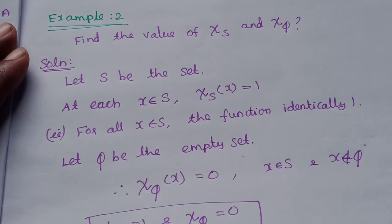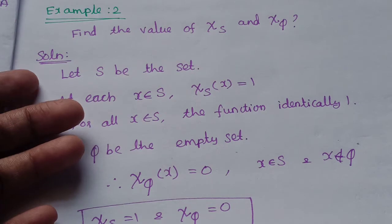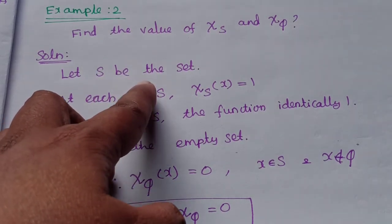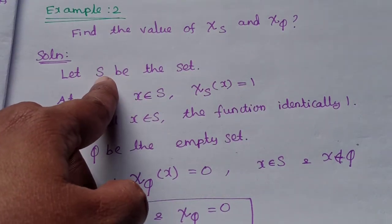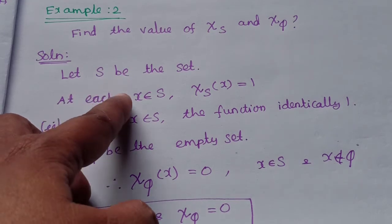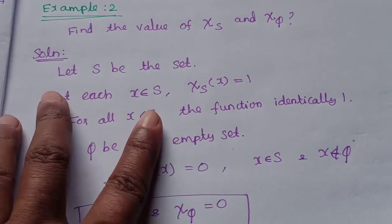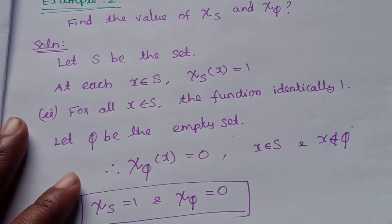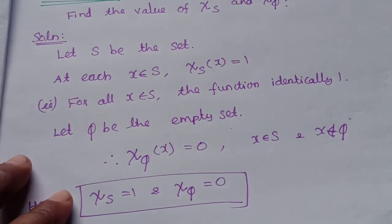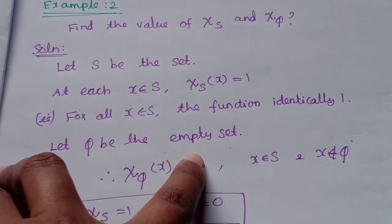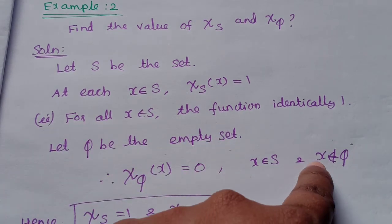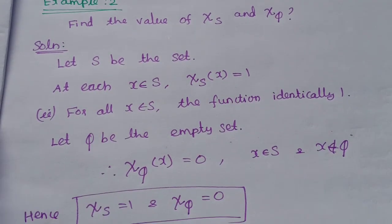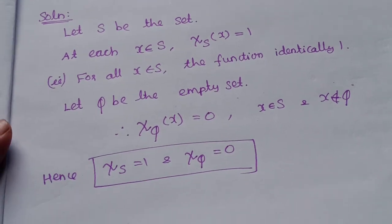Now for special cases: if S is the universal set, then for each x belonging to S, the characteristic function value is 1, so psi of S is identically 1 — the function maps every element to 1. If the set is the empty set, then for each x belonging to S, x does not belong to the empty set, so the characteristic function is 0. Thus psi of the empty set is identically 0. Hence the result.